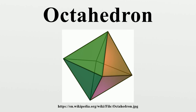More specifically, there are 2, 11, 42, 74, 76, 38, and 14 topologically distinct octahedra with six to twelve vertices respectively.